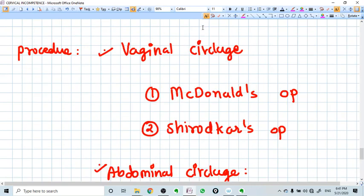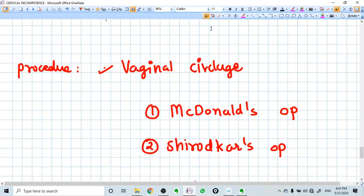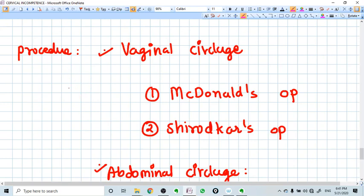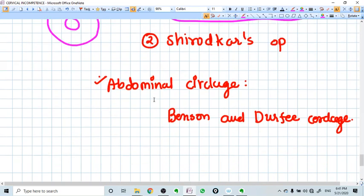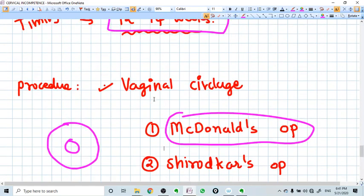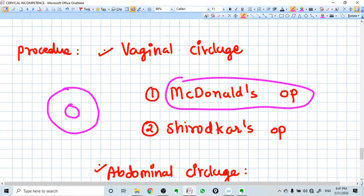The procedure is giving sutures to the cervix. This method can be done vaginally or abdominally, but the most common procedure is vaginal, and that is McDonald's operation. Abdominal cerclage is also done but it's not preferred.